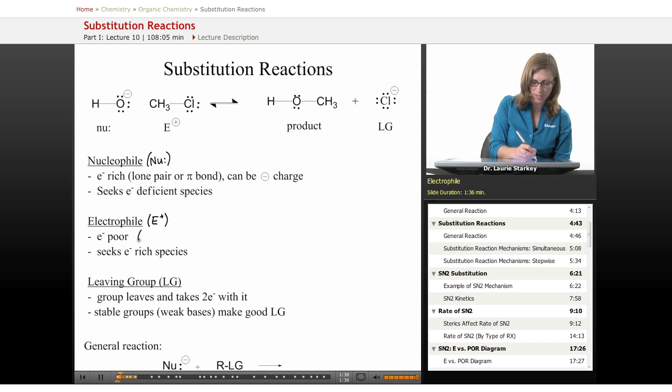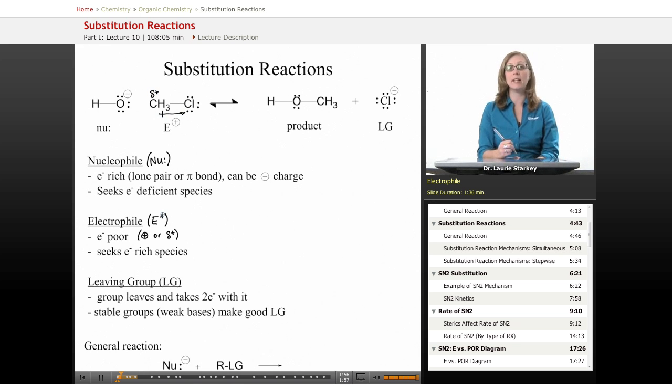It might be possible that you'll see a positive charge to show the electron deficiency, or more likely what we'll usually have is a partial positive. That's true for this electrophile here—it's a neutral species with no charges, but because this chlorine is pulling electron density away from the carbon, the carbon is in fact partially positive, and that's what makes it a good electrophile.